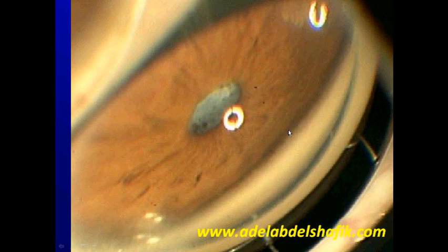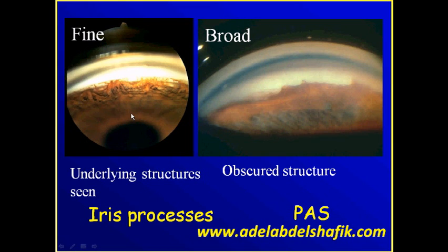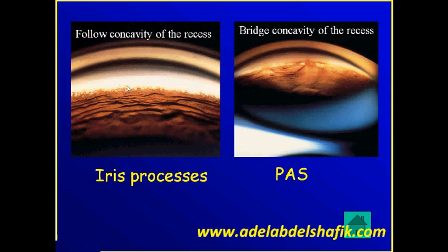You can see the iris, the ciliary recess, and the trabecular meshwork in an open angle; in a closed angle, nothing is seen. You may also find peripheral anterior synechiae — the normal fine iris strands versus widened broad areas of peripheral anterior synechiae. It is important to differentiate synechiae, which are widened areas of angle occlusion, from normal fine pigmented lines and normal iris processes.